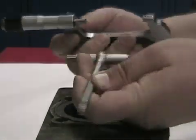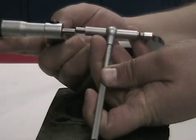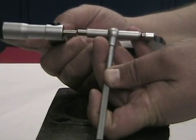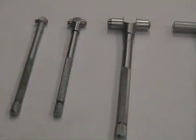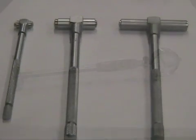A telescoping gauge is a spring-loaded tool that is used with a micrometer to measure the inside of holes or cylinder bores. They come in many sizes to measure from small to large holes.